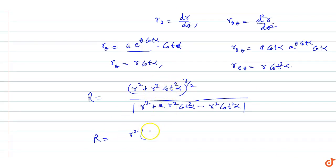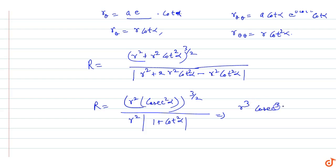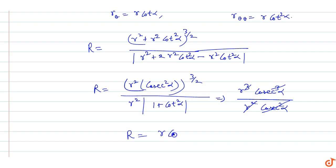Simplifying: the numerator becomes r² common factor giving (1 + cot²α) = cosec²α raised to power 3/2, so numerator is r³·cosec³α. The denominator simplifies to r²·cosec²α. Cancelling r² and cosec²α terms from numerator and denominator, the radius of curvature equals r·cosec α.